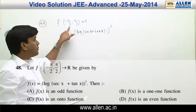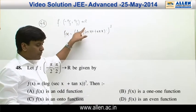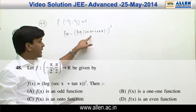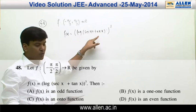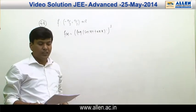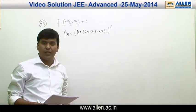For question 48, f is given from (−π/2, π/2) to ℝ, and f(x) = [log(sec x + tan x)]³. It is being asked whether the function is odd or even.